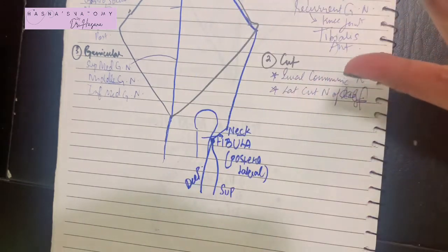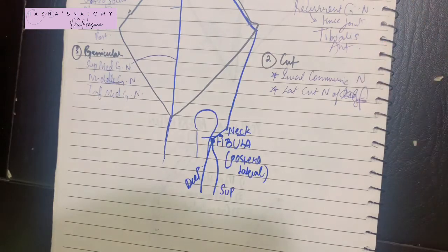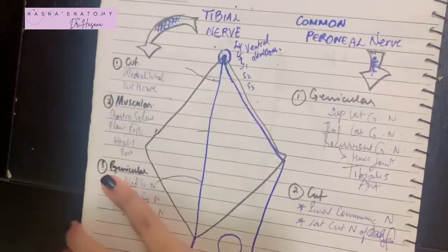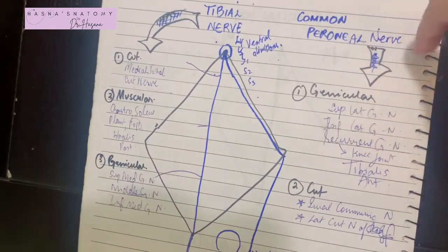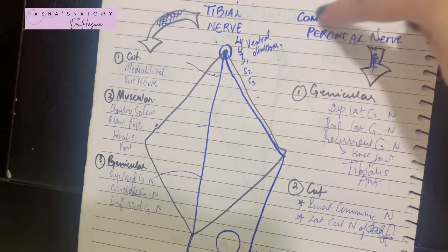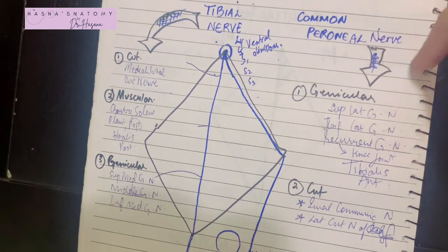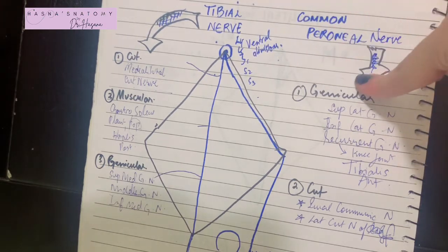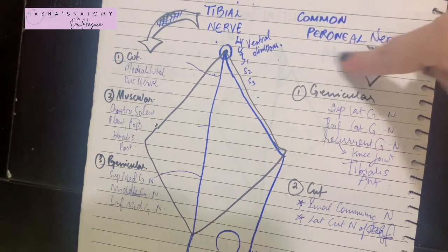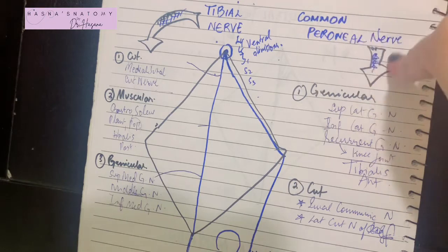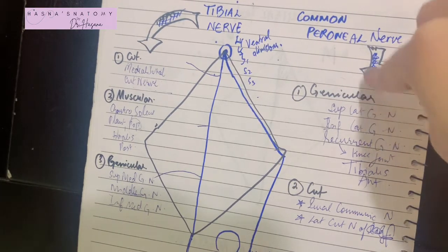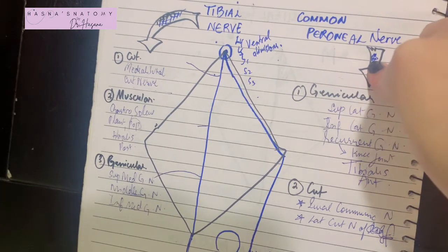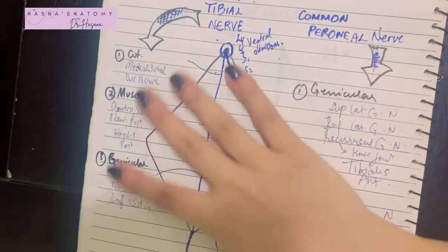An important clinical point: if there is any damage to the common peroneal nerve — most commonly at the posterolateral neck of the fibula, or due to dislocation — the resulting condition is known as foot drop, as you cannot evert or dorsiflex your foot.